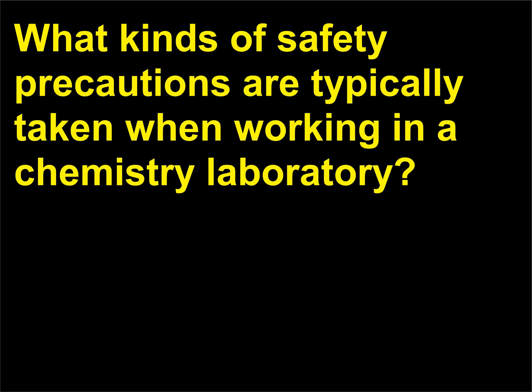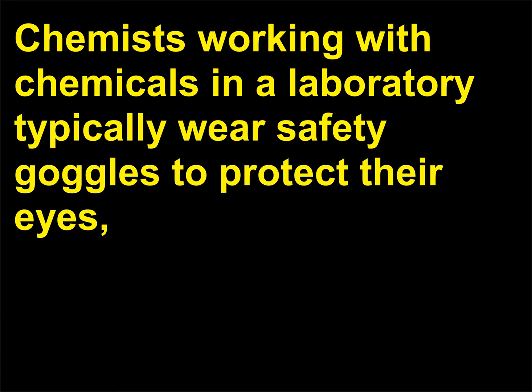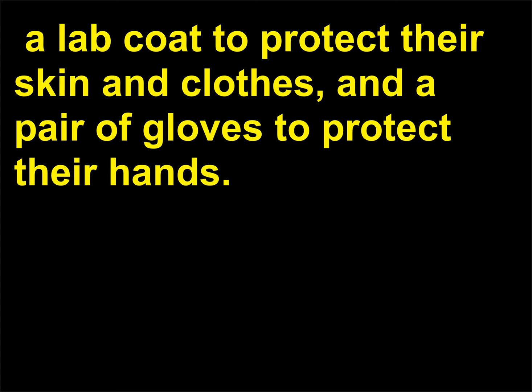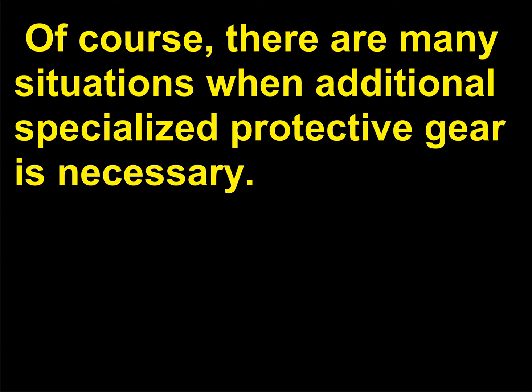What kinds of safety precautions are typically taken when working in a chemistry laboratory? Chemists working with chemicals in a laboratory typically wear safety goggles to protect their eyes, a lab coat to protect their skin and clothes, and a pair of gloves to protect their hands. Of course, there are many situations when additional specialized protective gear is necessary.